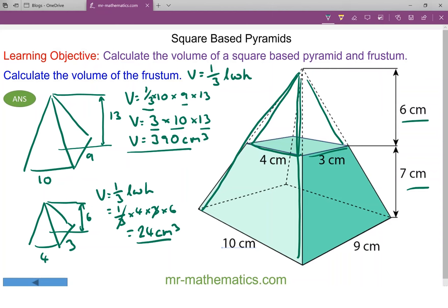That comes out as 390 minus the 24 of the rectangular based pyramid on top, and that comes out as 366 centimeters cubed. Thank you for watching, hope you found that useful.